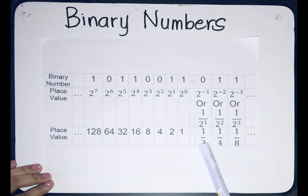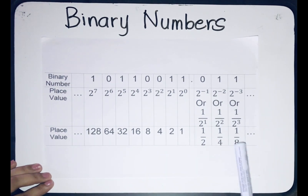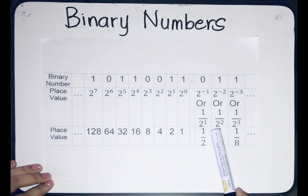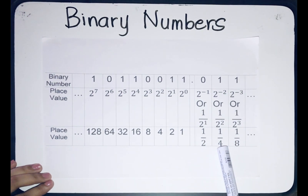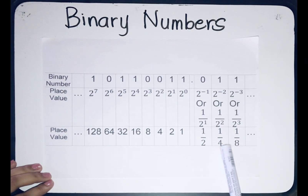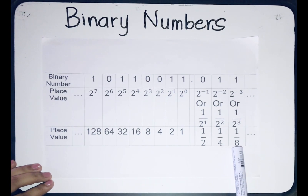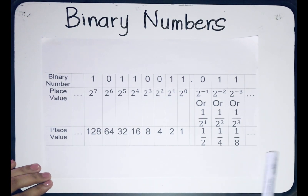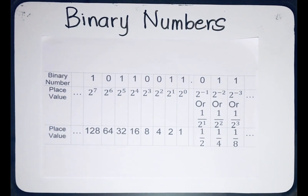On the right side, we multiply by 1 half. So we always start with 1 half, then 1 half times 1 half equals 1 fourth, and 1 fourth times 1 half equals 1 eighth, and so on. It is important to remember these place values because we are going to use them in converting binary numbers to decimal and vice versa.